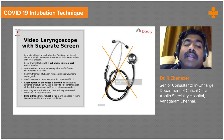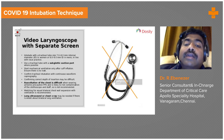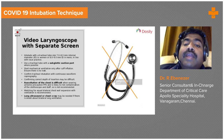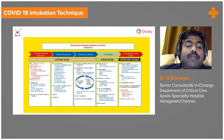Consider using an endotracheal tube with a subglottic suction port attached. Some endotracheal tubes have a small suction port at the subglottic area, which prevents pooling of secretions there and reduces the incidence of ventilator-associated pneumonia. If you have such tubes, please use them. This is part of an emergency tracheal intubation checklist covering PPE, equipment preparation, anticipating difficulty, and all necessary steps.